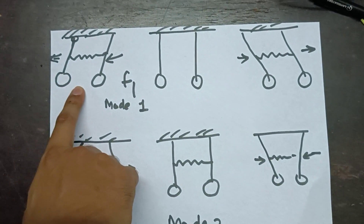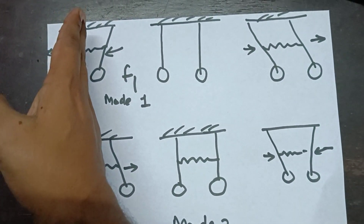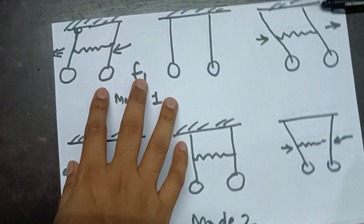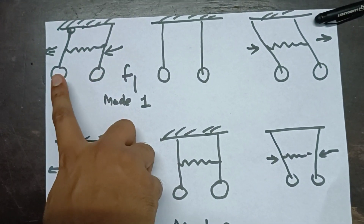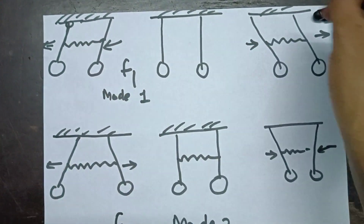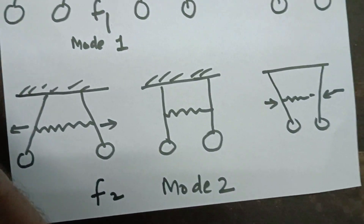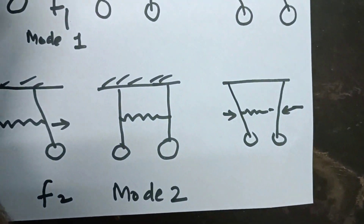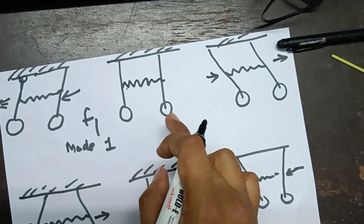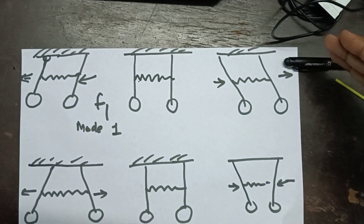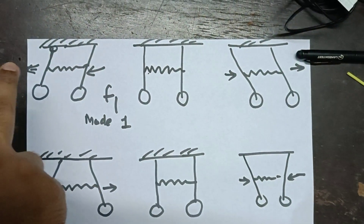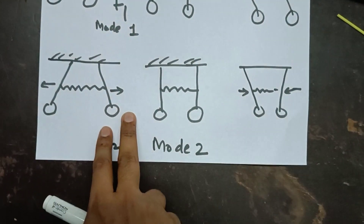This is mode one, when both pendulums are moving in the same direction. We can see this pendulum is moving in this direction and this pendulum is also moving in this direction, so the spring is acting like a rigid body. Then both pendulums will come back to neutral position, then again go to the extremity — left extremity, middle, and right extremity. So this upper part is mode one, and this is mode two.